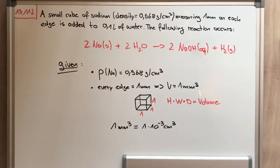So we got the given information: the density of the sodium cube and the information that every length of the edge is one millimeter, so we got a volume of one cubic millimeter. Because we got a cube, the height multiplied by the width multiplied by the depth equals the volume. And the volume of one cubic millimeter is 1 × 10^-3 cubic centimeters.